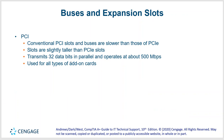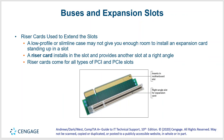Conventional PCI slots and buses are slower than those of PCIe — that's what the 'Express' stands for. The slots are slightly taller than PCIe slots. PCI transmits 32 bits of data in parallel and operates at about 500 megabits per second. It's used for all types of add-on cards.